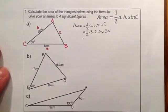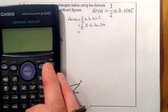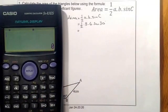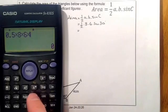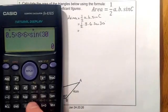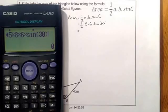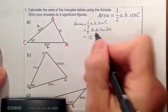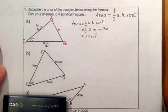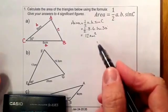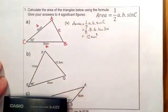On the calculator, I'll use 0.5 for a half: 0.5 times 8 times 6 times sine 30. Make sure your calculator's in degrees. That gives an answer of 12, and since I'm working in centimetres, that's 12 square centimetres. I don't need to write it to four significant figures as it's a whole number. That's part A complete.